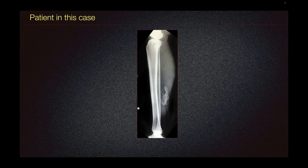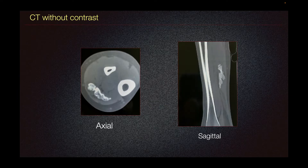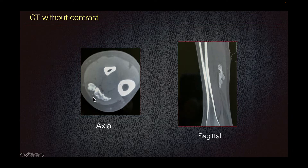The patient presented with this lateral radiograph of tibia and fibula showing dense calcification along the posterior calf. The CT demonstrates the calcification correlating to the finding on radiograph, demonstrating this curvilinear calcification in the gastrocnemius muscle.